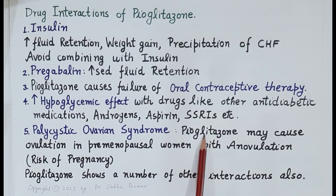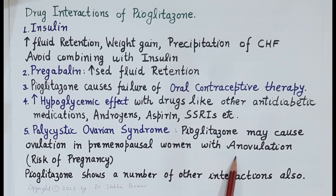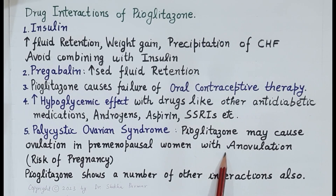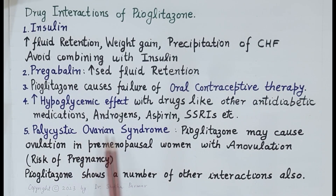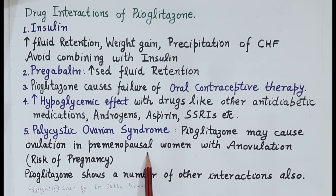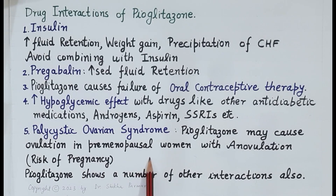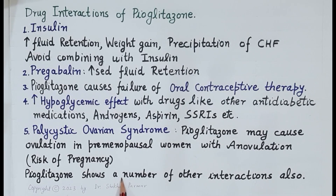Pioglitazone, by decreasing insulin resistance, may cause ovulation in premenopausal women with anovulation — that is, premenopausal women who do not normally ovulate may start ovulating because of the reduced insulin resistance. This is especially seen in polycystic ovarian syndrome (PCOS). The occurrence of ovulation increases the risk of pregnancy in premenopausal women, so it should be used carefully. Besides these, pioglitazone also shows a number of other drug interactions.